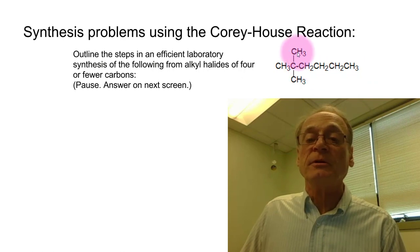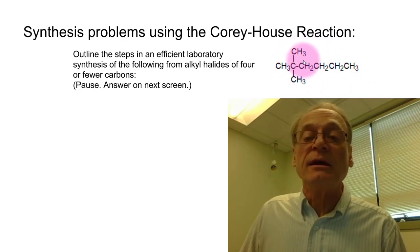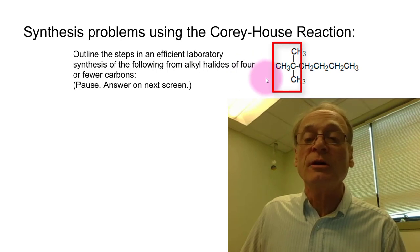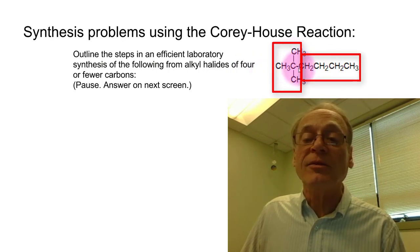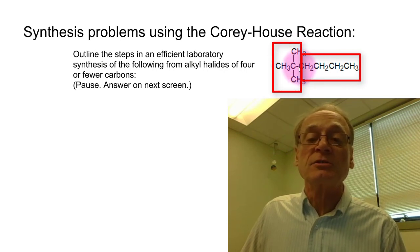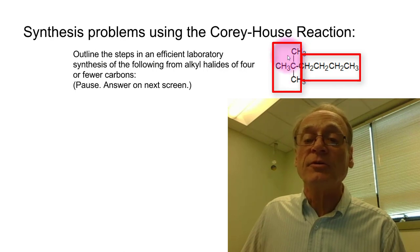Here's an example synthesis problem: we want to make a molecule with eight total carbons, using alkyl halides of four or fewer carbons. This gives us a four-carbon piece and a four-carbon piece, so we want to form that central carbon-carbon bond. One part will be the alkyl halide and the other will be the Gilman reagent. Since the alkyl halide cannot be tertiary, the tertiary part will be our Gilman reagent and the primary part will be our alkyl halide.